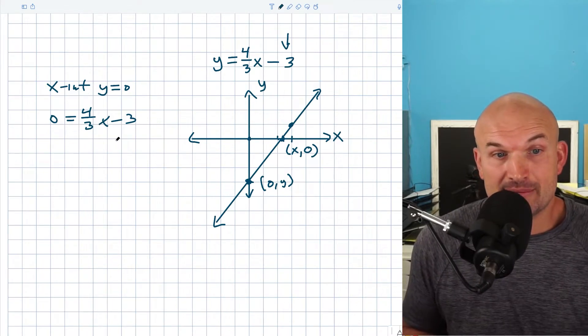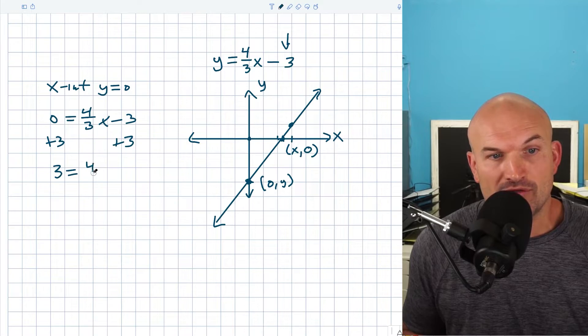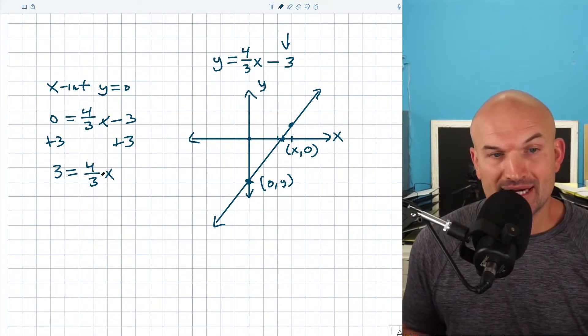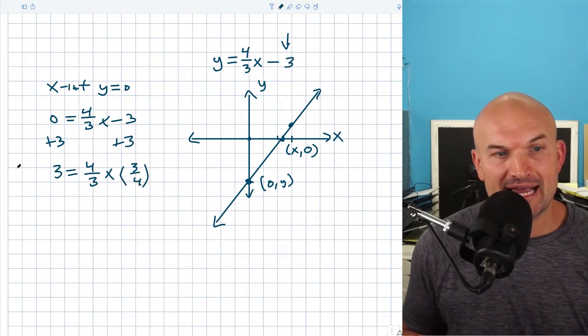And now you can see that I have basically a two-step equation, right? I can just add the three to the other side. So I get three equals four-thirds x. And now if I want to be able to get rid of multiplying by four-thirds, I can go ahead and just multiply by the reciprocal on both sides. So I can multiply by three-fourths.